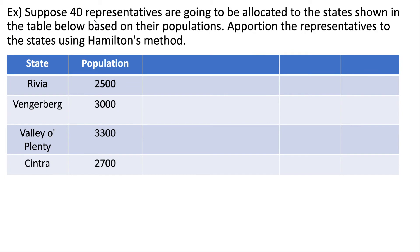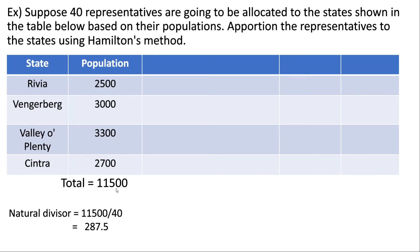Now let's look at one more example. Suppose 40 representatives are going to be allocated to the states shown in the table based on their populations — apportion the representatives using Hamilton's method. Again, I'd suggest pausing the video to try it on your own first. The first thing we do is find the total population by adding up all the state populations. Then we find the natural divisor by dividing total population by the house size, which is 40. Our natural divisor comes out to 287.5. Next we find our natural state quotas by dividing each state population by the natural divisor.